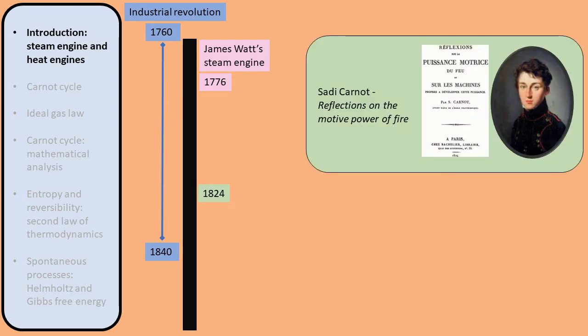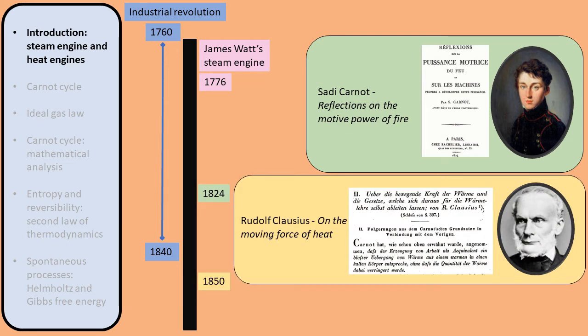In 1824, Sadi Carnot wrote his book Reflections on the Motive Power of Fire. As the title says, the central topic is how heat can be used to perform useful work. In particular, he asked the question: can we make the steam engine more efficient? Or more generally, how efficient can a heat engine theoretically be? Carnot proposed an engine which has the highest efficiency that is theoretically possible. A few decades later, in 1850, Rudolf Clausius analyzed Carnot's engine mathematically. This mathematical analysis led to the idea of entropy.